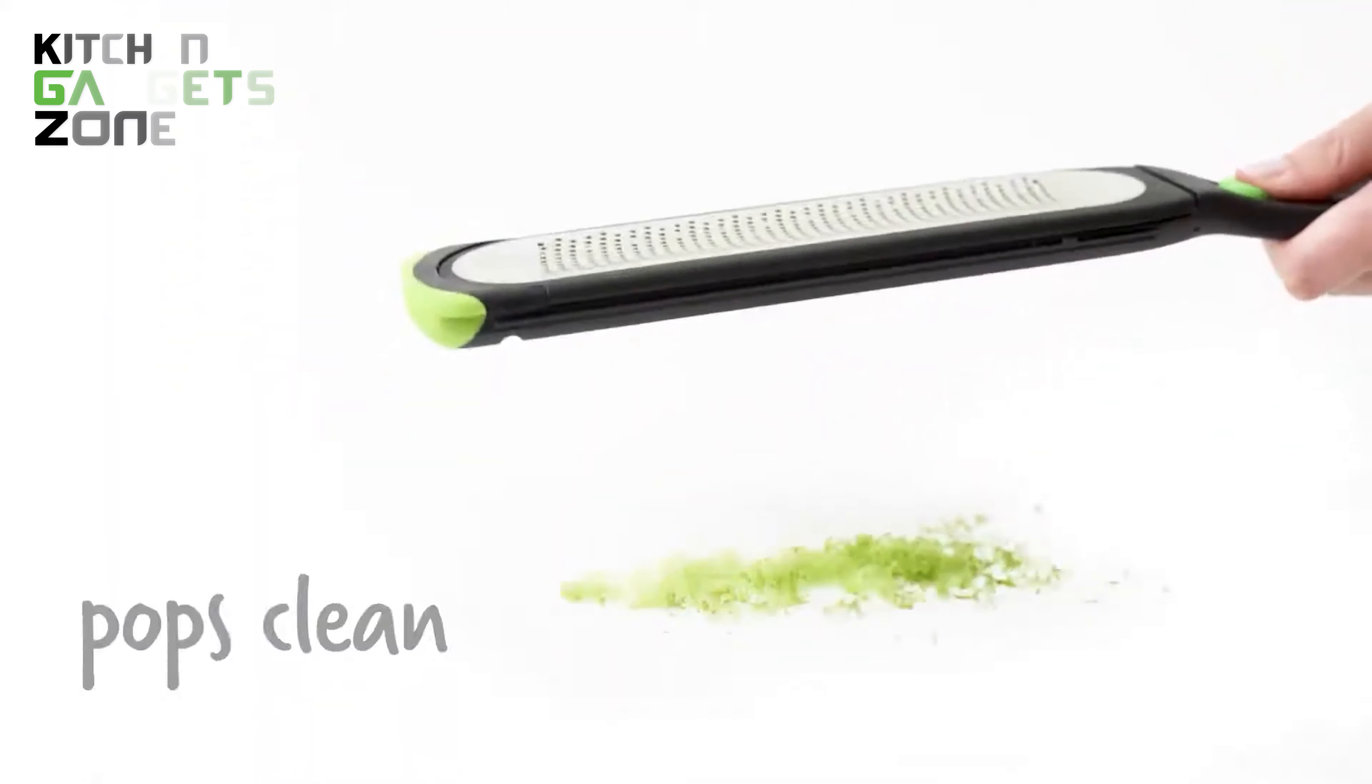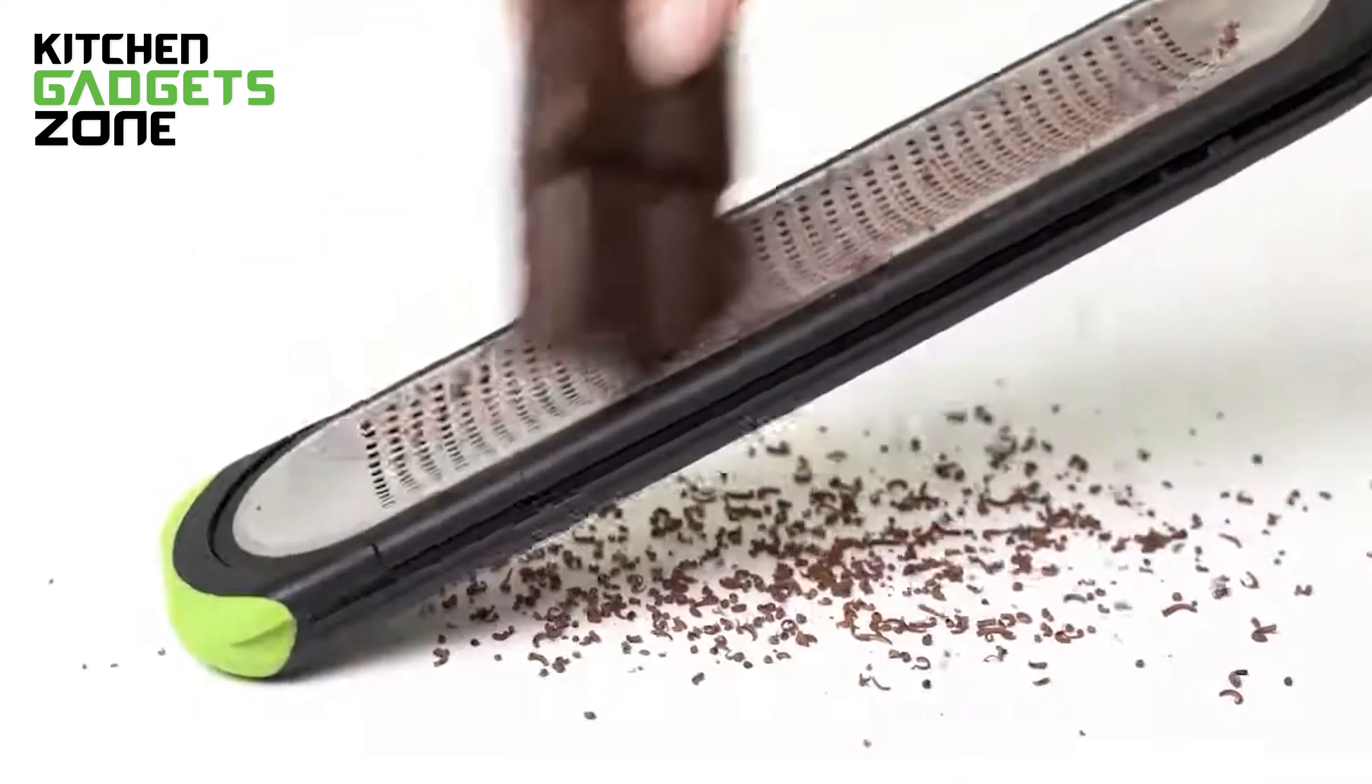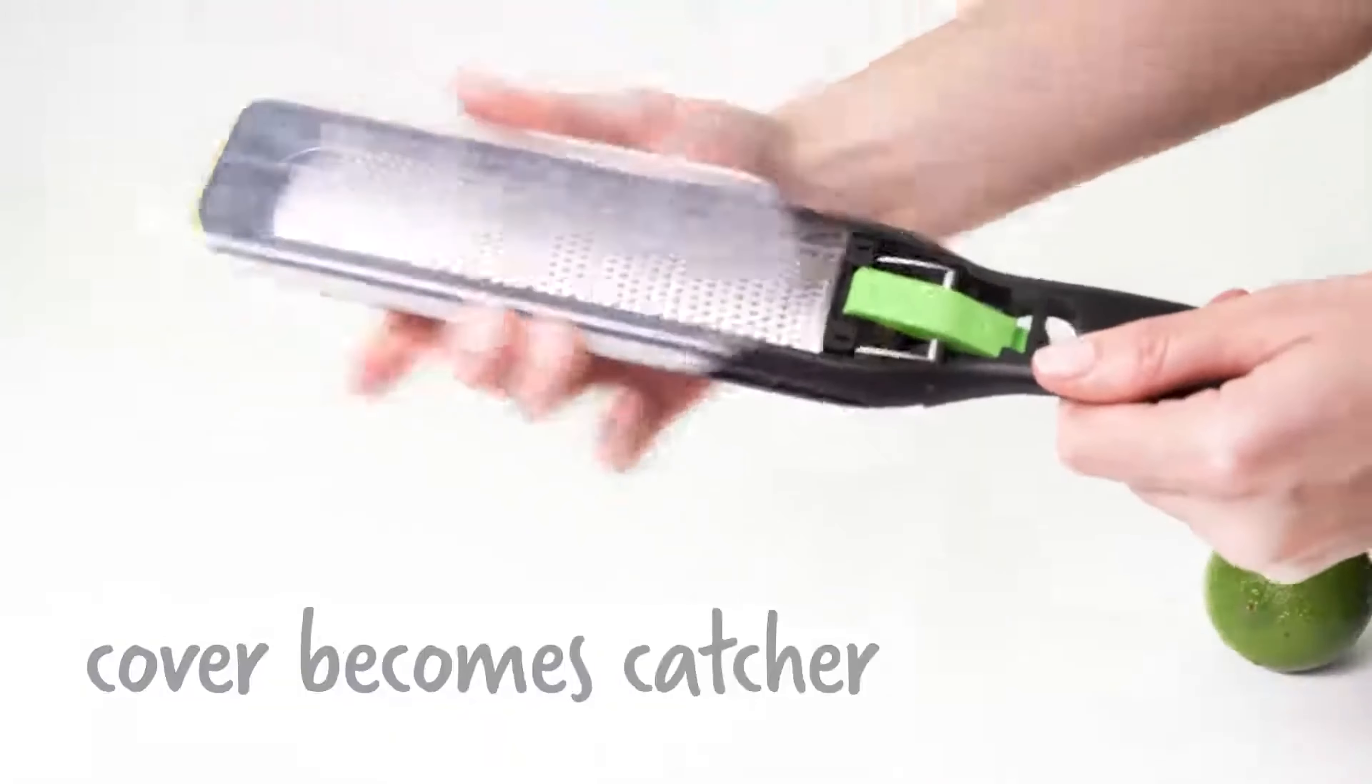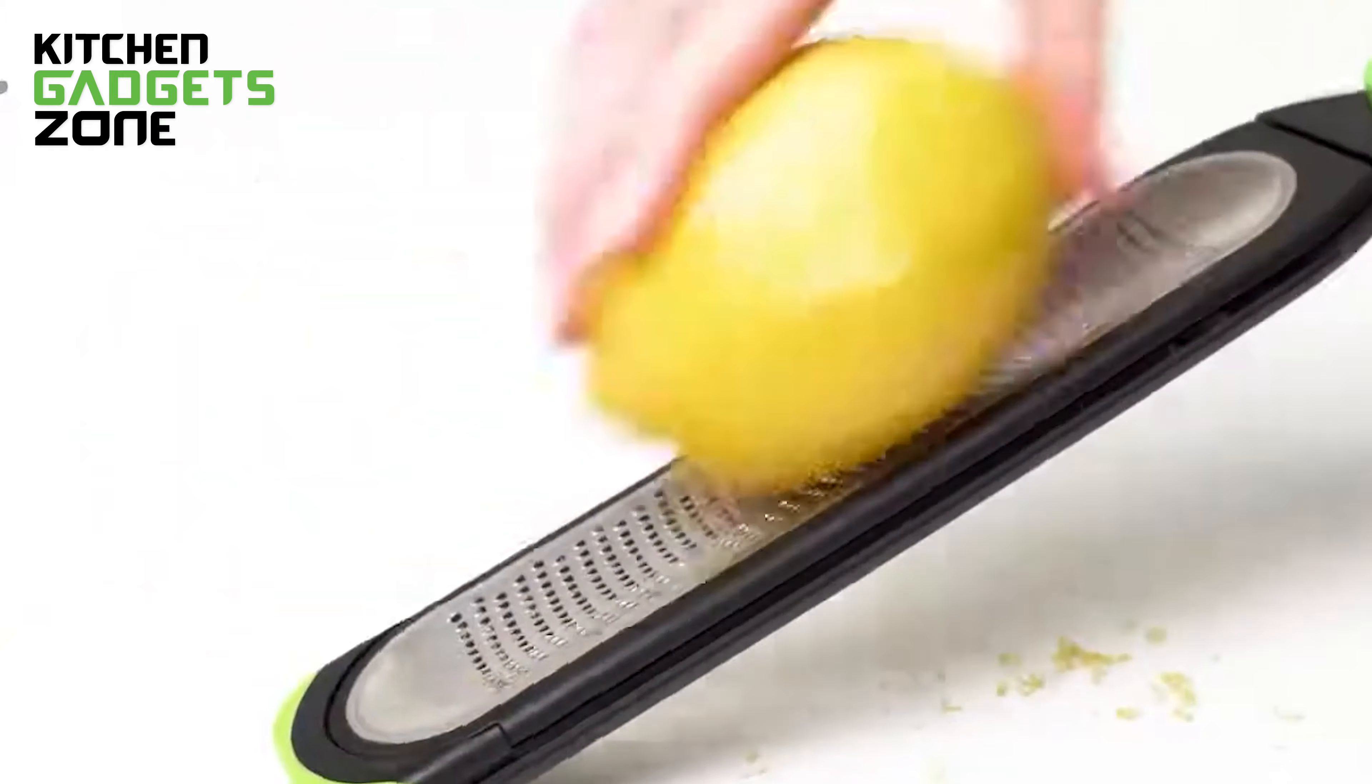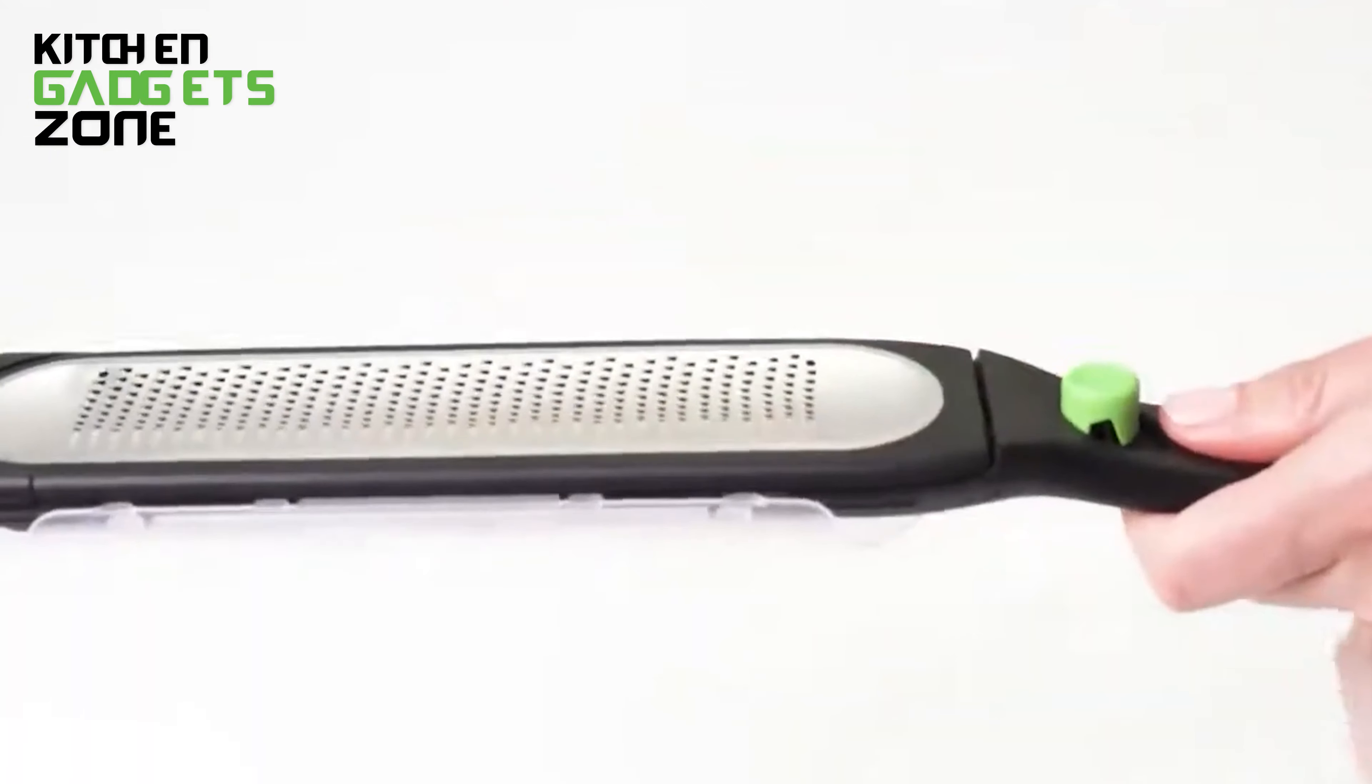With the push of a button, Zesta instantly cleans and clears itself of any clinging zest. No more wasted zest or clogged graters. The protective blade cover snaps or slides on for worry-free storage and even doubles as the zest catcher, measuring up to two tablespoons. From lemon bars to orange-glazed salmon, the Zesta Citrus Zester is a must-have for adding bright, fresh flavor to all your favorite dishes.